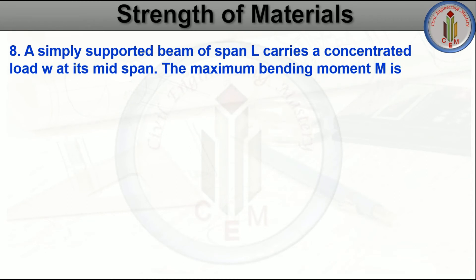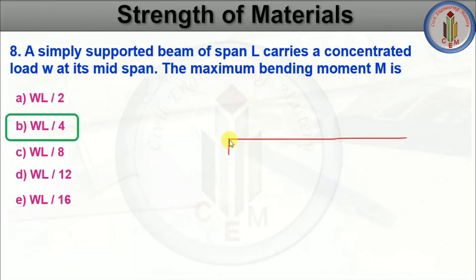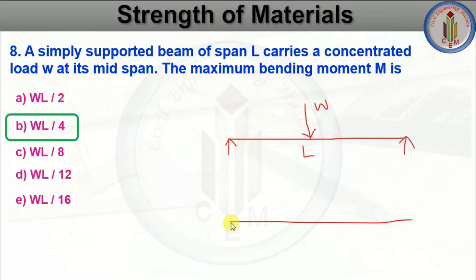A simply supported beam of span L carries a concentrated load W at its mid span. The maximum bending moment M is — WL/2, WL/4, WL/8, WL/12, or WL/16. The answer is WL/4. Drawing the bending moment diagram for a simply supported beam with a concentrated load at center, the maximum bending moment is WL/4.